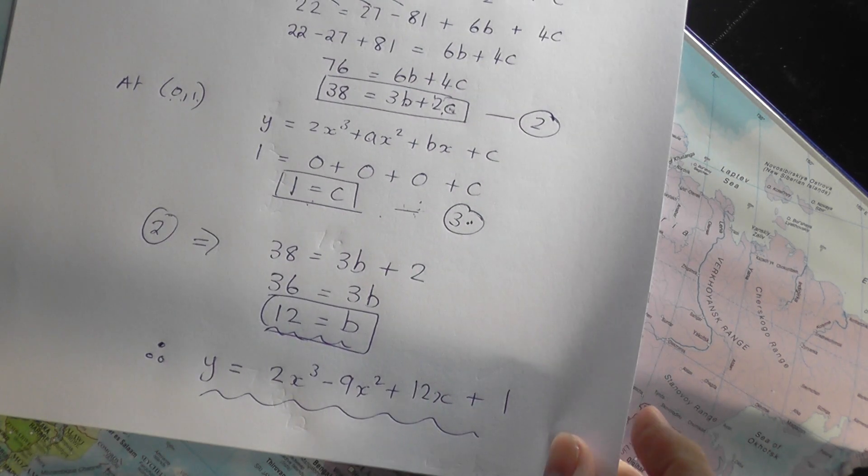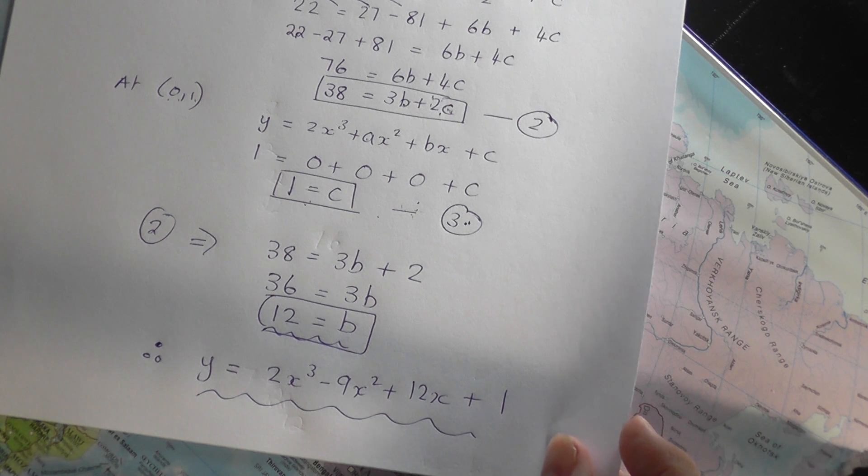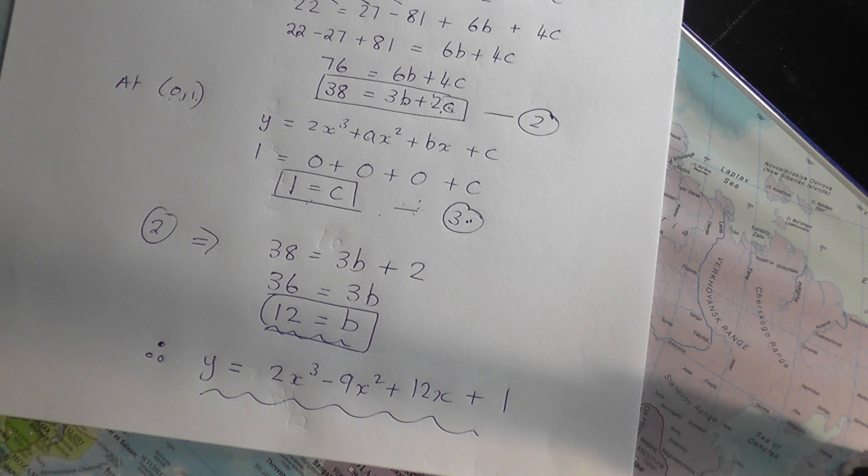And that would be a typical A-level question whereby you're given some information about stationary points, or in this case inflection point, and you're asked to go backwards and work out the precise equation of the curve.